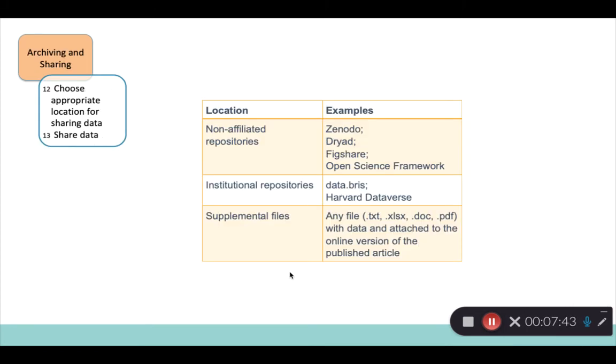Lastly, in terms of thinking through where you want to archive and share your data, there are lots of different options. We have a list of them here. In the paper, we actually go into the advantages and disadvantages of each, so I encourage you to view those. The best option would be a non-affiliated repository, as it's likely the most findable, provided it's free as well, so be sure to look in our resources for that.